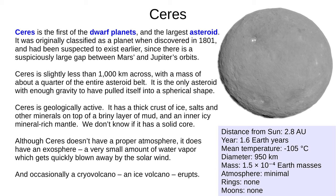Now we'll move on to the dwarf planets, starting with Ceres. Astronomers had noticed a suspiciously large gap between the orbits of Mars and Jupiter and hypothesised a planet between them. In 1801 they found their missing planet, but Ceres was later deemed too small and reclassified as an asteroid, then in 2006 it became a dwarf planet — it's both. Ceres is slightly less than 1,000 kilometres across and contains about a quarter of the mass of the asteroid belt — the only asteroid massive enough to have pulled itself into a spherical shape. Ceres is geologically active, with a thick crust of ice, salts, and other minerals on top of a briny layer of mud and an inner icy mineral-rich mantle. It has an exosphere of a small amount of water vapour, which gets quickly blown away by the solar wind, and occasionally a cryovolcano — an ice volcano — erupts on the surface.